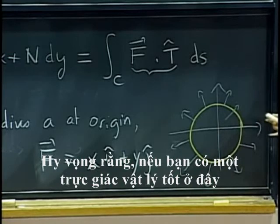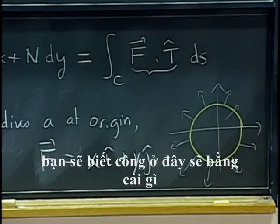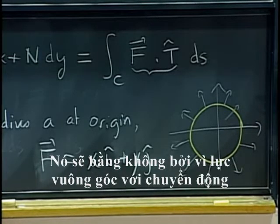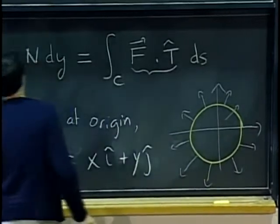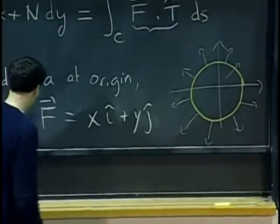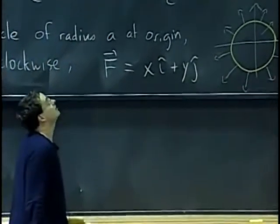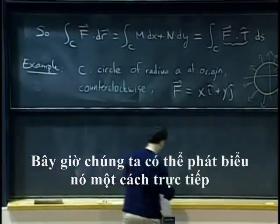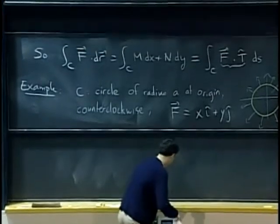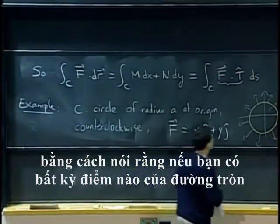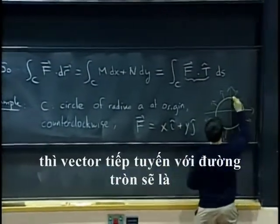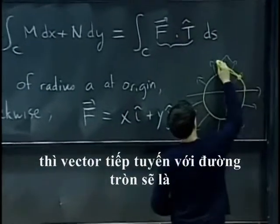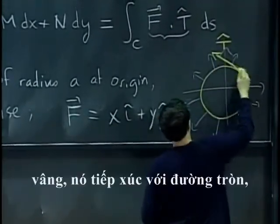Hopefully, if you have good physics intuition here, you already know what the work is going to be. It is going to be zero because the force is perpendicular to the radial motion. If we take any point of a circle, then the tangent vector to the circle will be tangent to the circle.